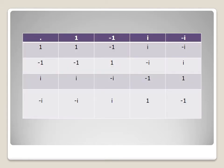The Cayley table has rows and columns labeled 1, −1, i, −i. We take the product: 1·1 = 1, 1·(−1) = −1, 1·i = i, 1·(−i) = −i. Similarly, we write all values in the body of the table. We can observe that all elements in the body of the table are elements present in G.